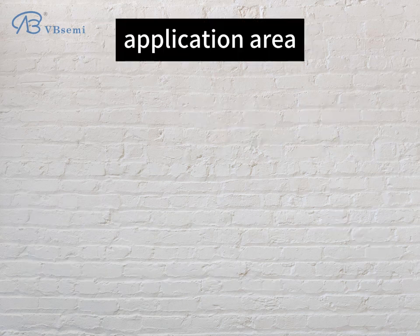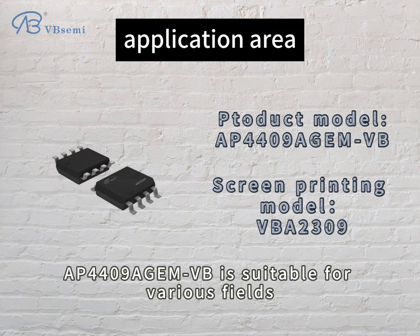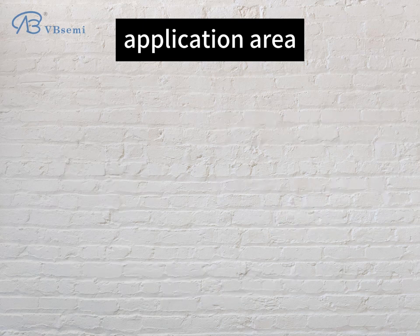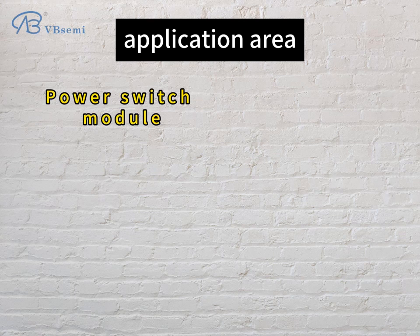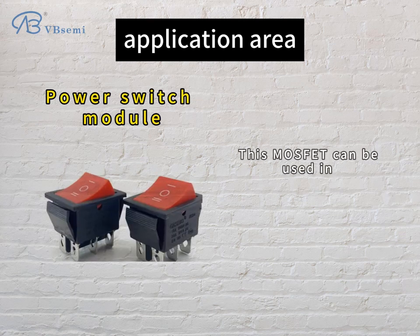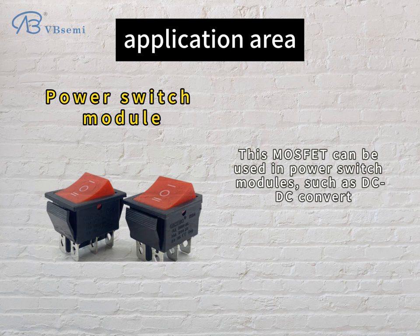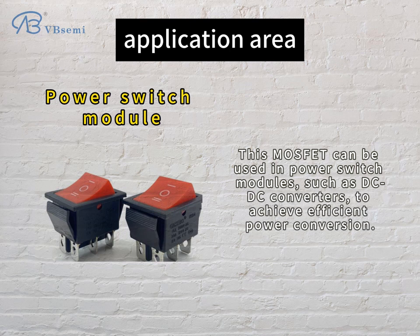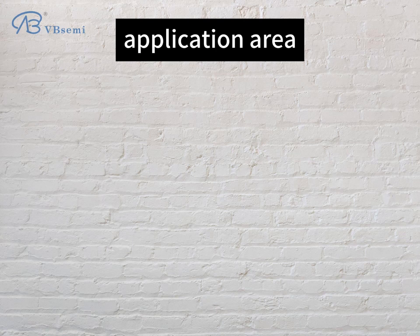Application area: the AP4409-AGEM-VB is suitable for various fields. Power switch module — this MOSFET can be used in power switch modules, such as DC-DC converters, to achieve efficient power conversion.